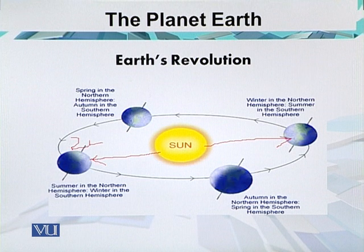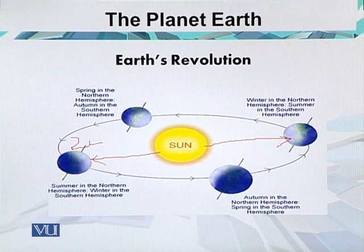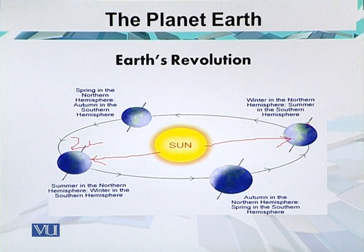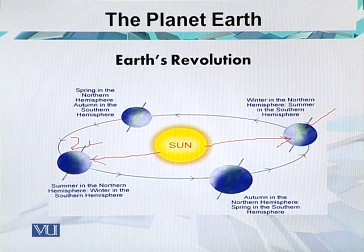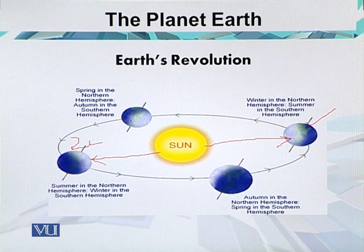Whereas the southern hemisphere receives winter season, which has the lowest temperature during the year. Now on the 22nd of December, when the Earth's southern part is inclined towards the Sun, it receives the highest temperatures, so the vertical rays are over the Tropic of Capricorn.